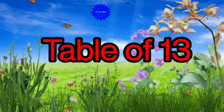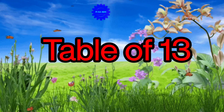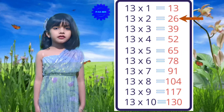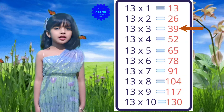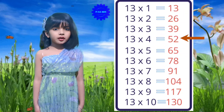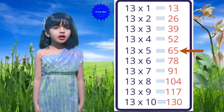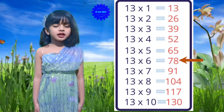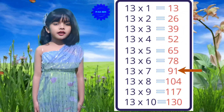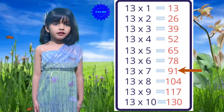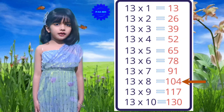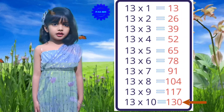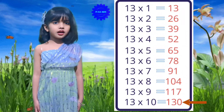Table of 13: 13 ones are 13, 13 twos are 26, 13 threes are 39, 13 fours are 52, 13 fives are 65, 13 sixes are 78, 13 sevens are 91, 13 eights are 104, 13 nines are 117, 13 tens are 130.